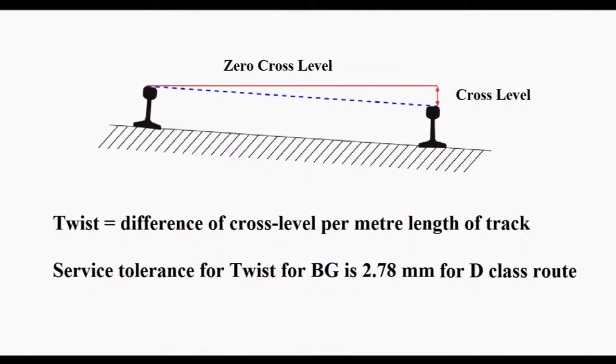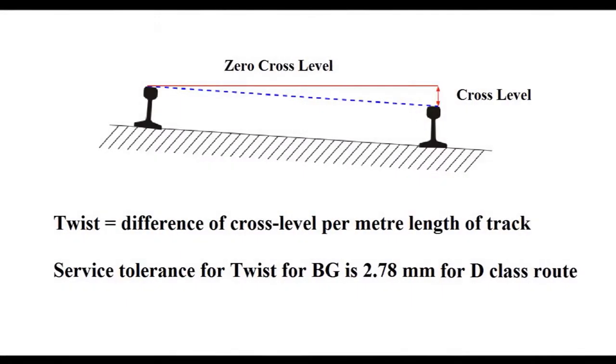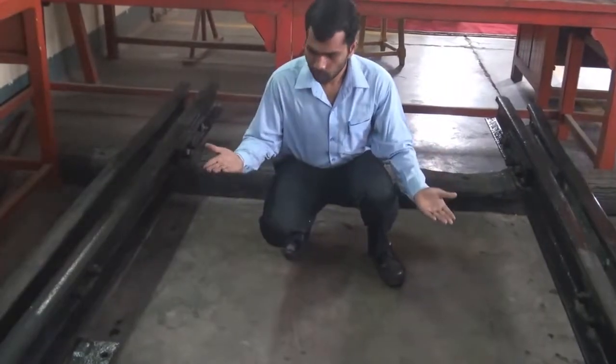Another important track parameter is cross level. It is defined as the difference between the elevation of the rails.